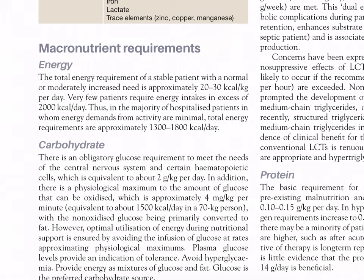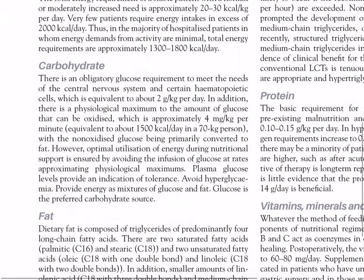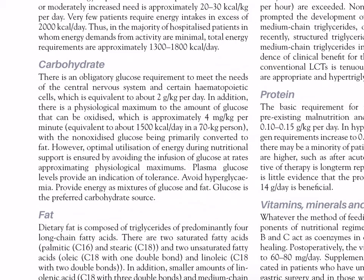Carbohydrate: there is an obligatory glucose requirement to meet the needs of the central nervous system and certain hematopoietic cells, equivalent to about 2 g/kg/day. There is also a physiological maximum for glucose oxidation of approximately 4 mg/kg/minute, equivalent to about 1500 kcal/day in a 70 kg person, with non-oxidized glucose being primarily converted to fat. Optimal utilization during nutritional support is ensured by avoiding glucose infusion rates near the physiological maximum; plasma glucose levels indicate tolerance. Provide energy as mixtures of glucose and fat.